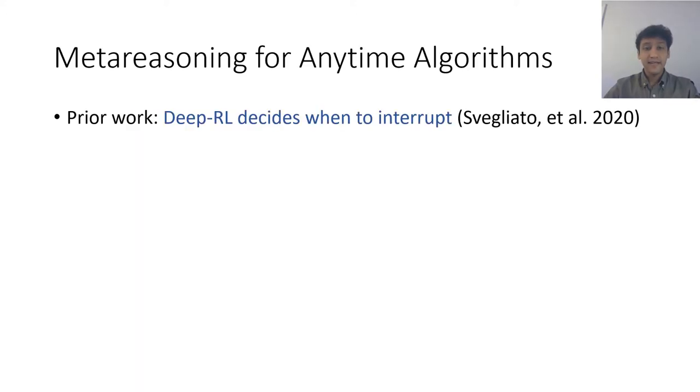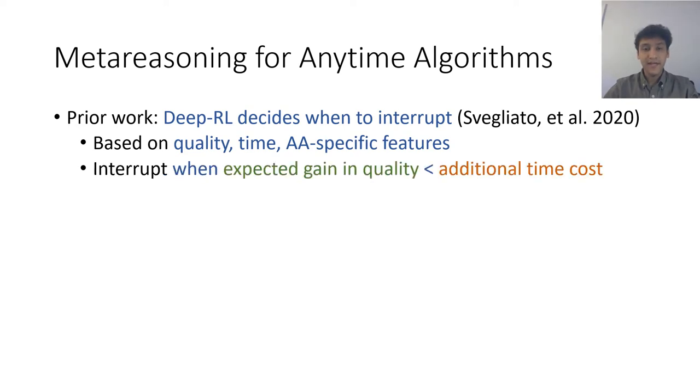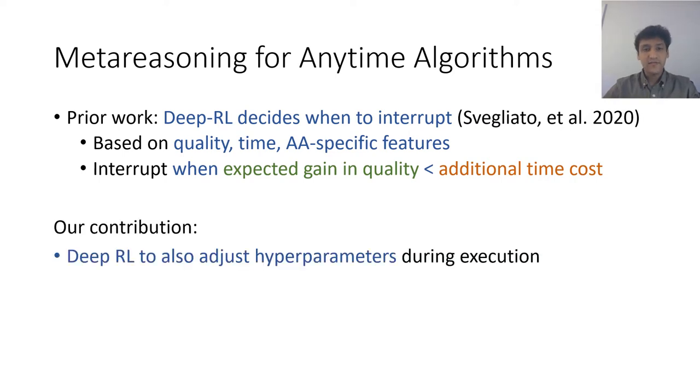Recent work has applied deep reinforcement learning to decide whether or not to interrupt an anytime algorithm as it executes. The decision is based on quality, the elapsed time, and any algorithm specific features that would indicate whether or not the expected gain in quality if the algorithm is allowed to execute would be worth the additional time cost.